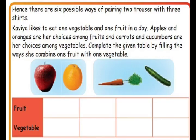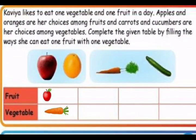Coming to the next example: Kaviar likes to eat one vegetable and one fruit in a day. She has two fruits — apple and orange — and two vegetables — carrot and cucumber. She eats only one fruit and one vegetable at a time. We are going to find all the possible ways.